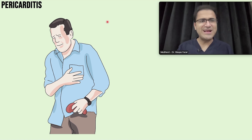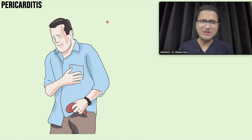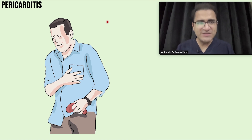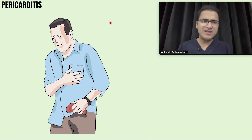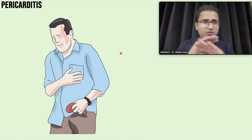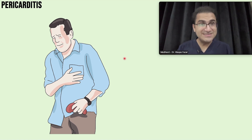A 50-year-old man comes to your clinic complaining of chest pain. The patient had a viral flu one week back that he completely recovered from. Now he complains of chest pain that worsens when he lies down straight, but improves when he sits up or leans forward — it's a positional pain. When he takes a deep breath, the chest pain worsens — it's a pleuritic chest pain. You perform an ECG and see diffuse ST segment elevations associated with PR depression. This is a classical presentation of pericarditis.